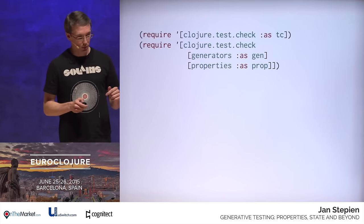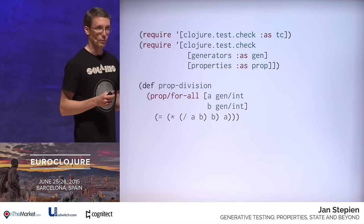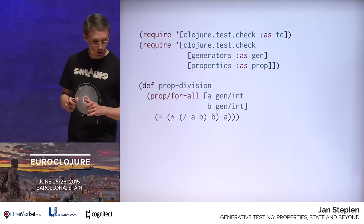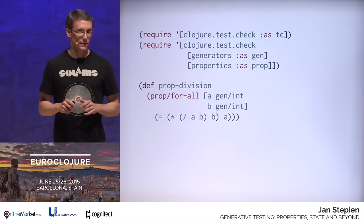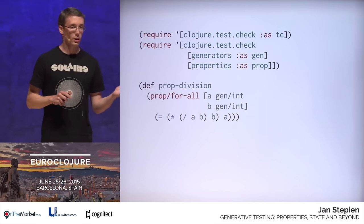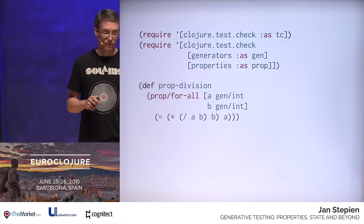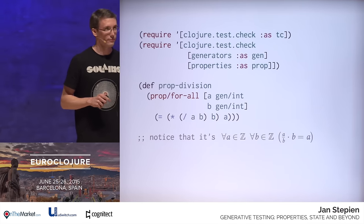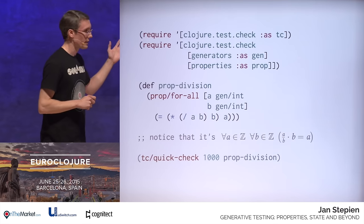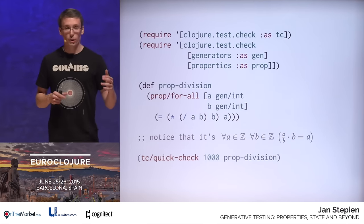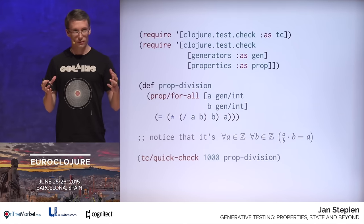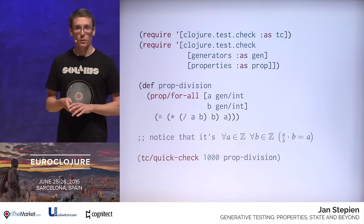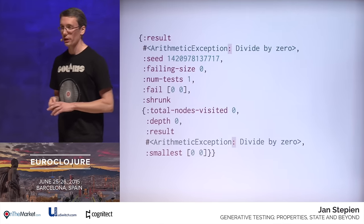Using what we just required, we can now define a so-called property. `prop` is a customary name for those symbols. For all A's being ints and for all B's being ints, we claim that the following property holds. Notice that if you squint, it's nothing but plain mathematics. Now, using the TestCheck `quickcheck` function, we can generate 1,000 random values, pipe them into our property, and verify that everything works as expected. If we evaluate this expression, we will get the following map back — and this doesn't look that good.